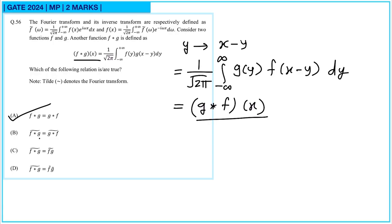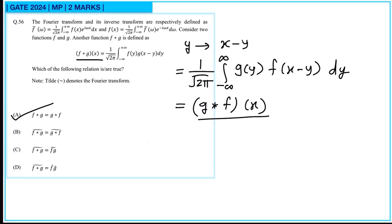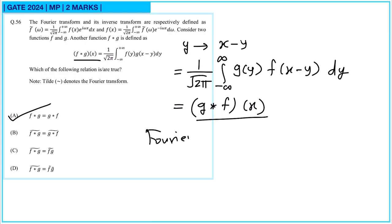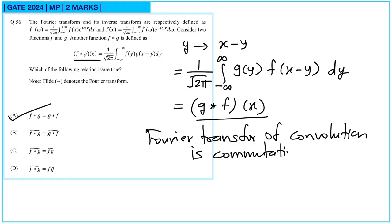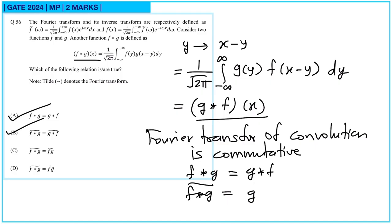The Fourier transform of a convolution is always commutative. Since f★g equals g★f, their Fourier transforms are the same, and this can also be written as f-tilde times g-tilde. So option D is correct and option C is not correct. Therefore options A, B, and D are correct.